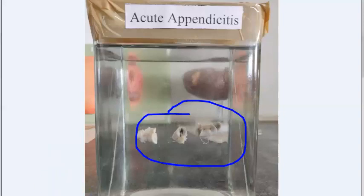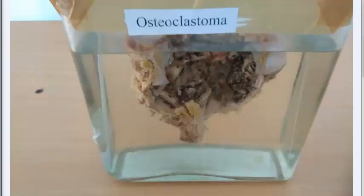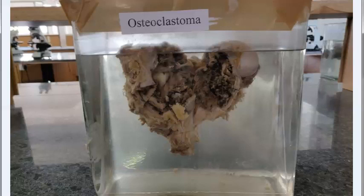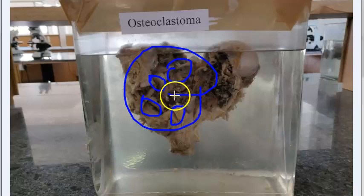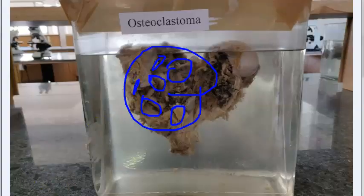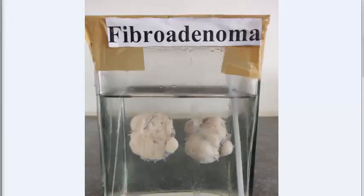Osteoclastoma — giant cell tumor — will usually affect the epiphysis of the long bone. You will see a well-circumscribed dark tan appearance with a thin shell of subperiosteal bone, hemorrhagic, necrotic, honeycombed appearance. In microscopy, you will see giant cells which are osteoclast-like with 100 nuclei, and stromal cells which are the actual tumor cells that are spindle-shaped.